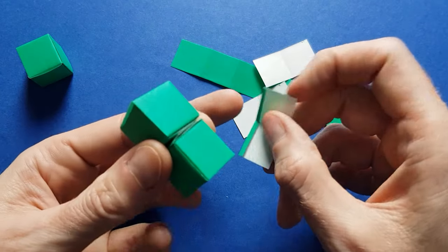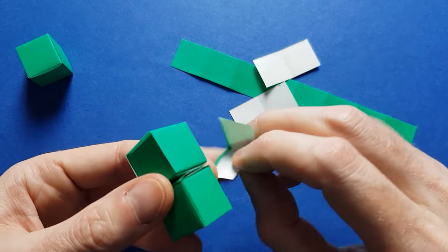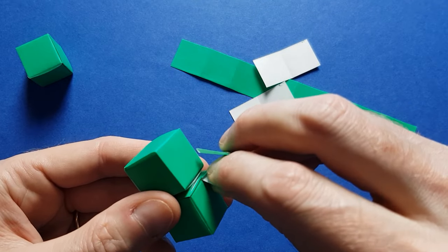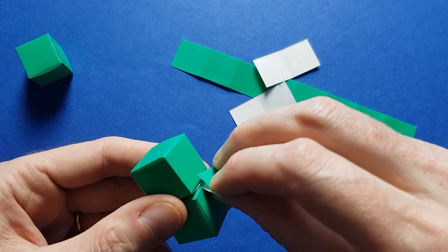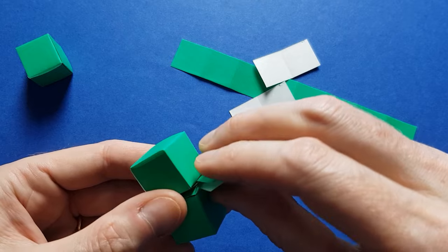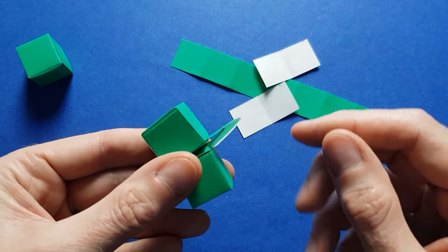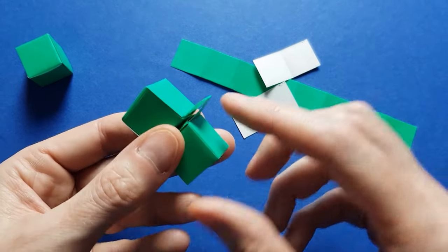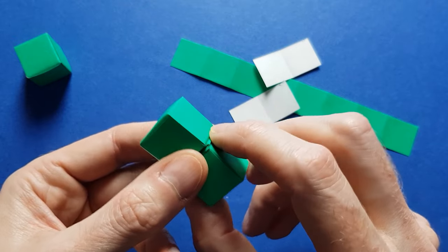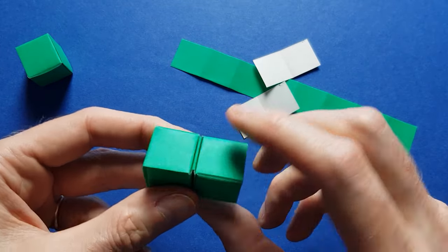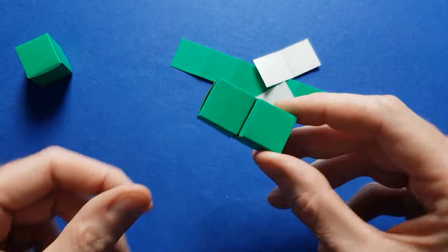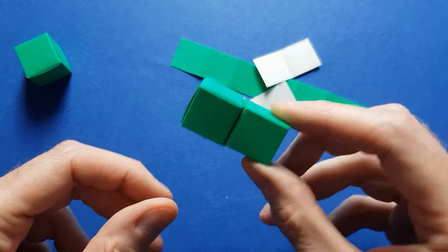So take the second clip and insert it in the other cube. And just push it inside. And now the two cubes are joined.